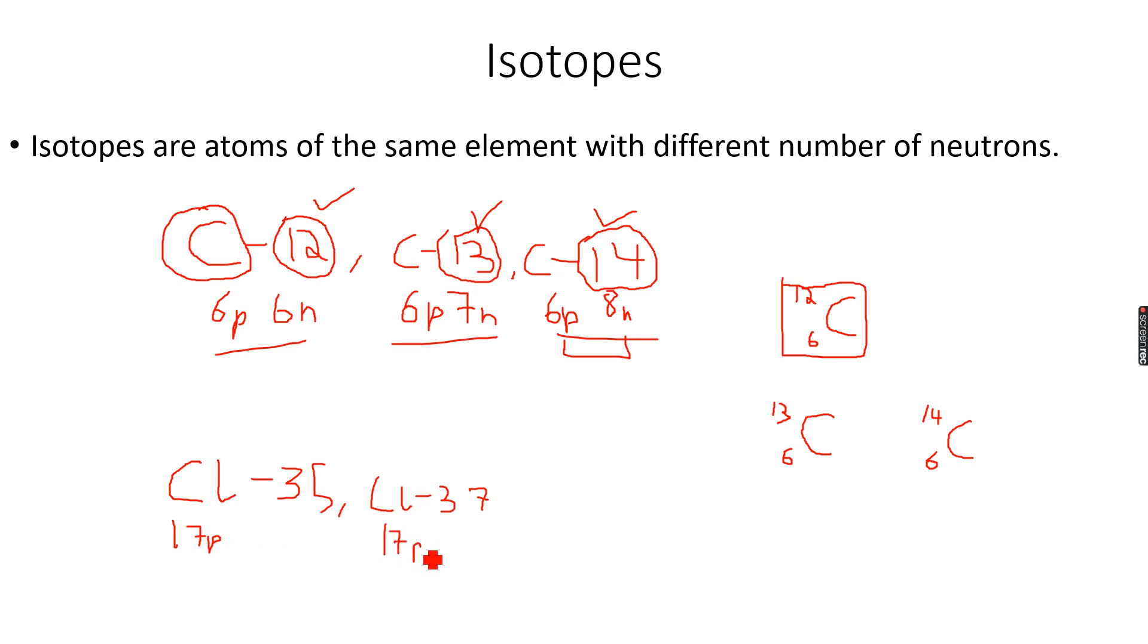However, chlorine 35 has 18 neutrons and chlorine 37 has 20 neutrons.